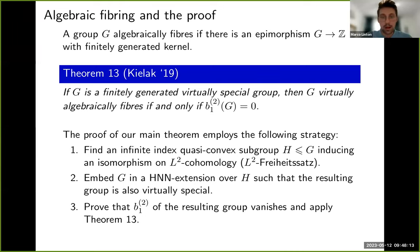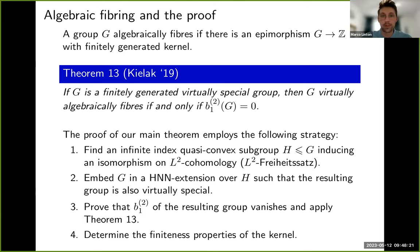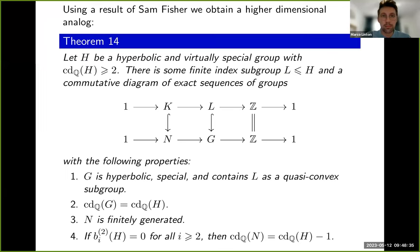But then it's not over — we also need to constrain the finiteness properties of the kernel of the algebraic fibration to ensure the resulting group is free bicyclic or virtually free bicyclic. The proof actually yields a higher-dimensional analog of the main theorem. To obtain this we use a result of Sam Fisher which builds on David Kielak's results. The full statement is: let H be a hyperbolic and virtually special group with rational cohomological dimension at most two.